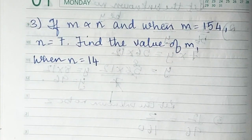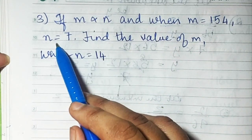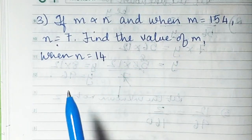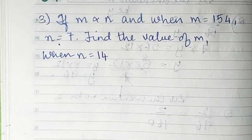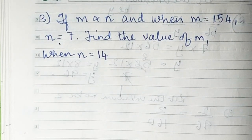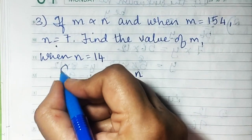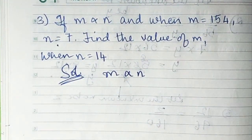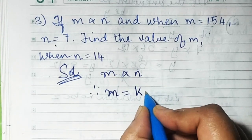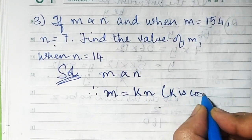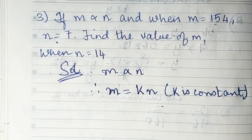Sum number 3: if M is directly proportional to N, M is 154 and N is 7, find the value of M when N is 14. We're given M equals 154 and N equals 7. When M is directly proportional to N, the equation of variation is M equals KN, where K is the constant of variation.